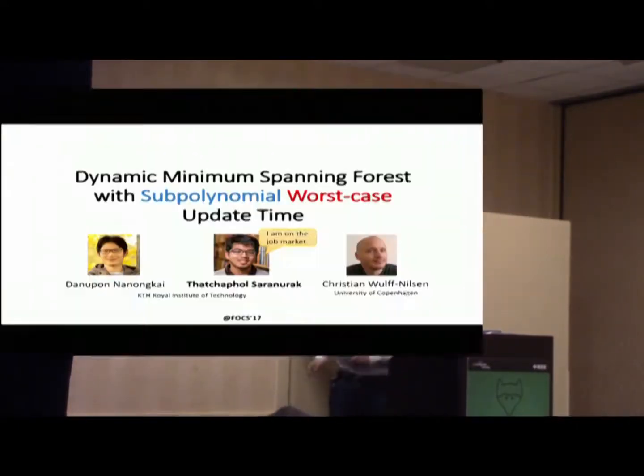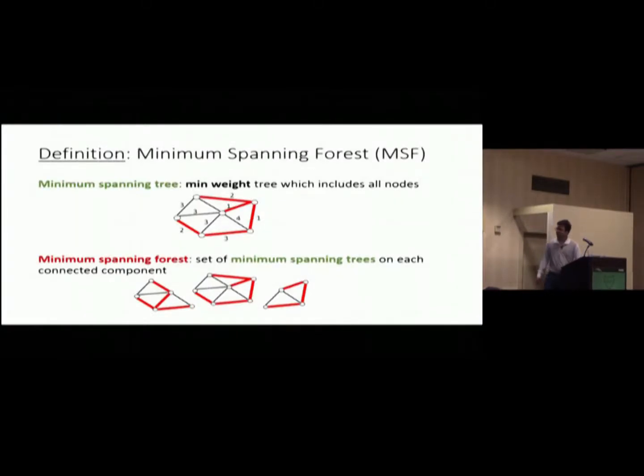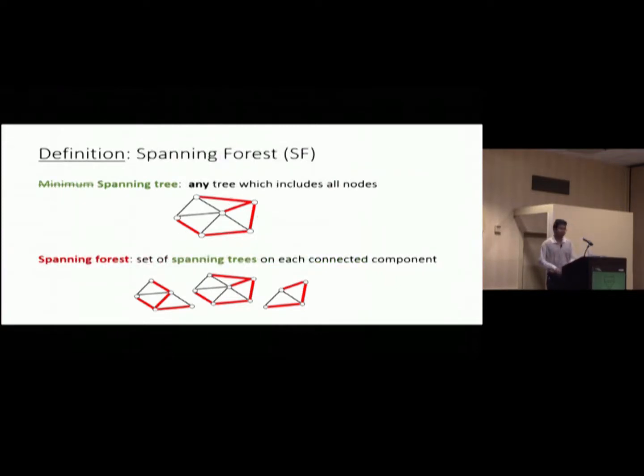And so just to remind everyone, minimum spanning forest, what it is. Minimum spanning tree is just a minimum weight tree that includes all nodes. And minimum spanning forest is a set of minimum spanning trees on each connected component. For each connected component, you get a minimum tree. And for spanning forest, this is just the same, but you forget about the weight, any tree.